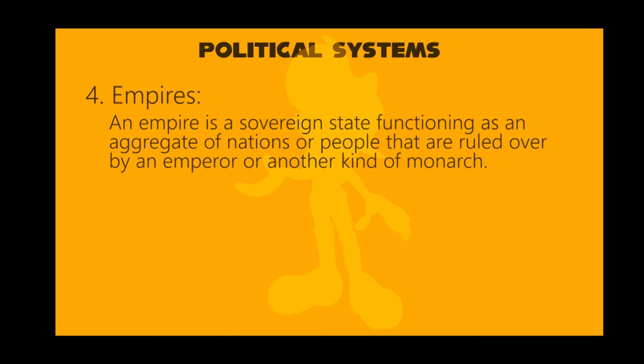Next, empire. An empire is a sovereign state functioning as an aggregate of nations or people that are ruled over by an emperor or another kind of monarch. Let us now consider a map view of the Roman Empire back in ancient times.